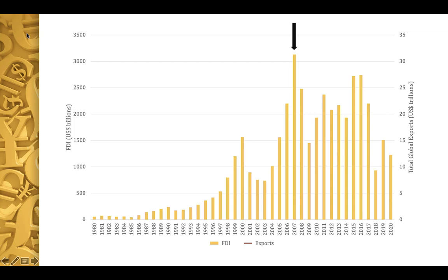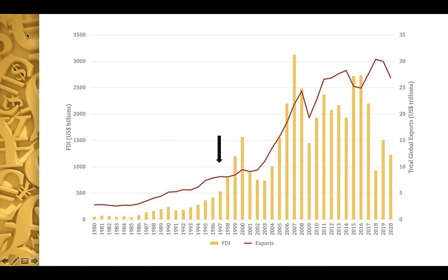Similarly, total global exports, which is a good proxy for the total value of international trade, measured about 5.2 trillion dollars in 1990, growing steadily since then despite several downturns due to recessions, global financial crises, and other events. Total global exports peaked in 2018 with a value of more than 30 trillion dollars, before falling as a result of the global COVID pandemic.